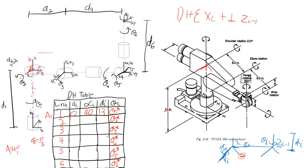Now we look at link 2, going from frame 1 to frame 2. The z1-axis and x-axis are parallel, so there is zero rotation or twist about them. We still have the rotational joint variable theta. There is a z offset, which we name d2, because it affects the 2-axis. In the x-direction, since the x-axes are parallel, the value is 8.